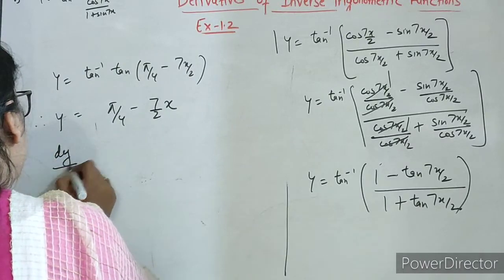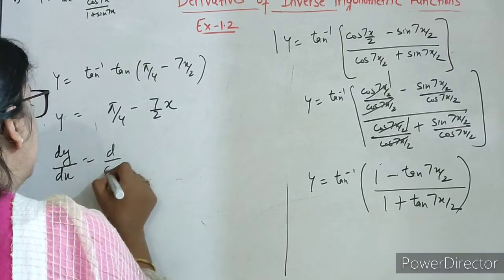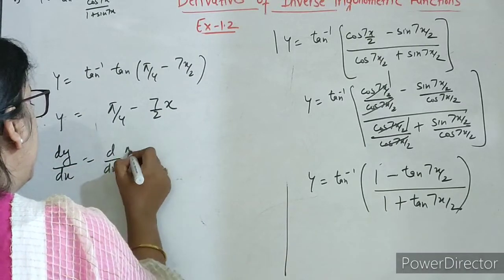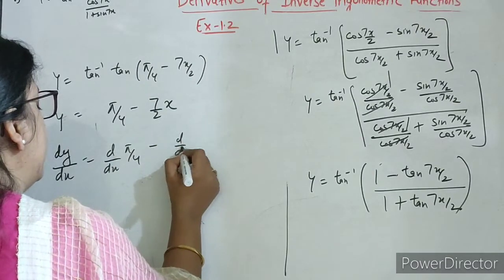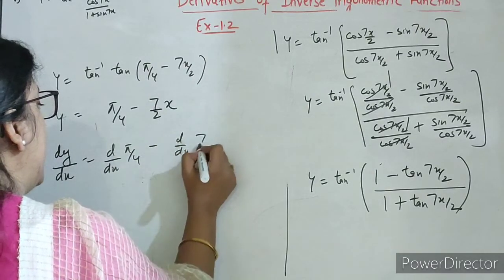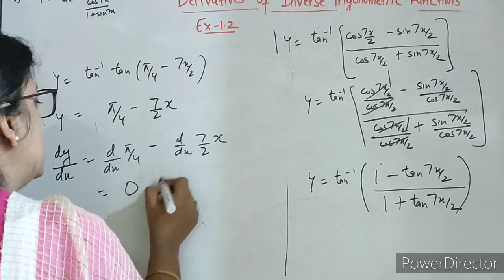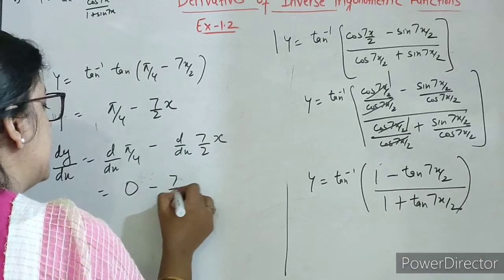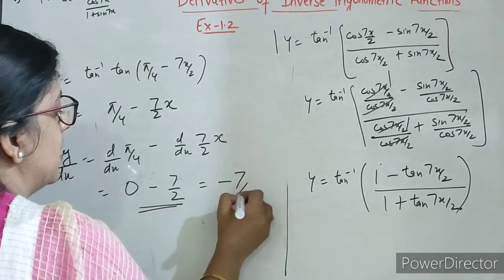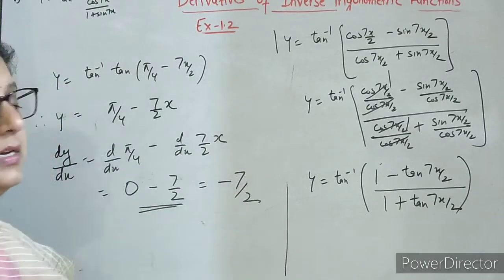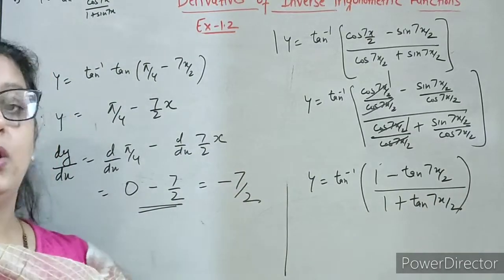Now differentiating on both the sides — abhi mein ne bataya derivative of ax kya hota hai, it is a. So toh 0 ho jayega pi by 4 ka, aur 7 by 2 aa jayega. So answer is minus 7 by 2.